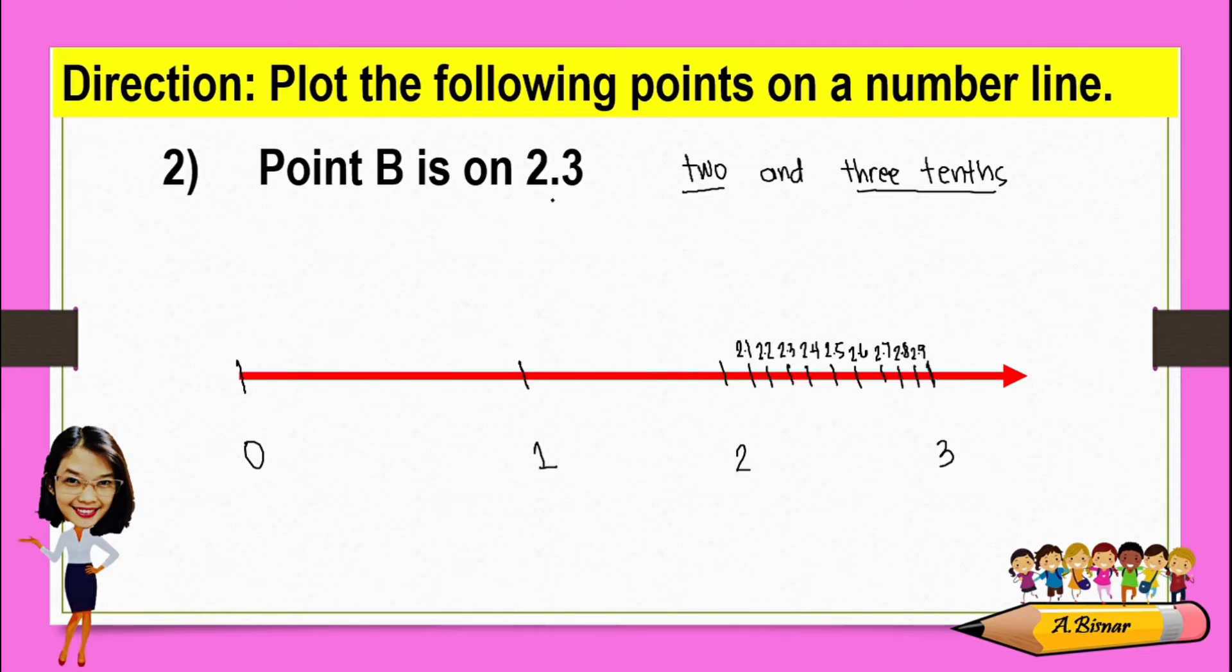From here, we can clearly see where 2.3 is. This will be where 2.3, or point B, is located.